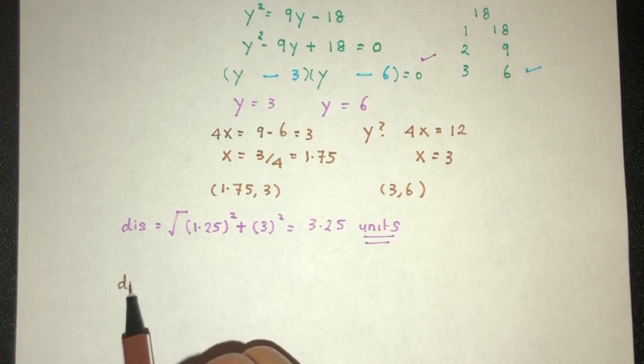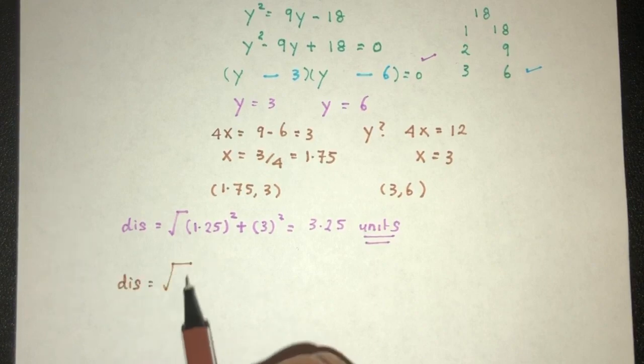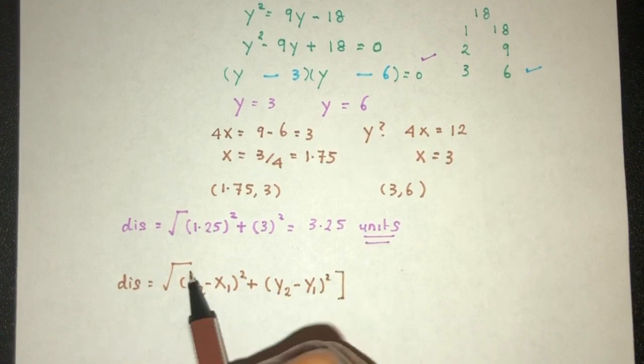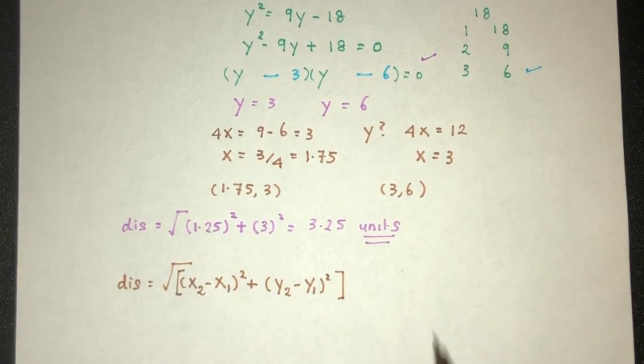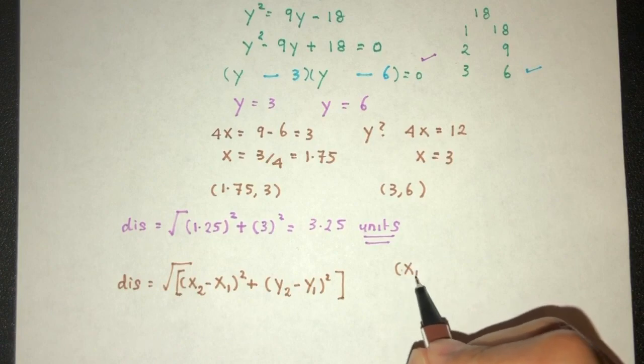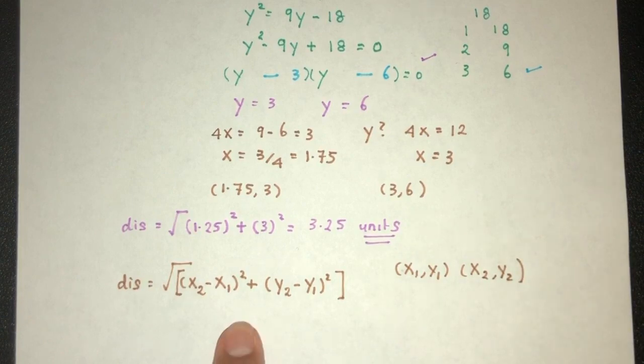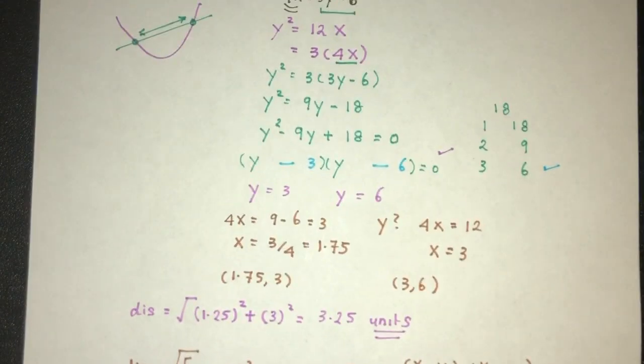Distance formula is what? It is x2 minus x1 square plus y2 minus y1 square. This is inside the square root of course, given that if you have two points, for example, x1, y1 and x2, y2. To find the distance, we'll use this formula. And this is a question in relation to coordinates geometry.